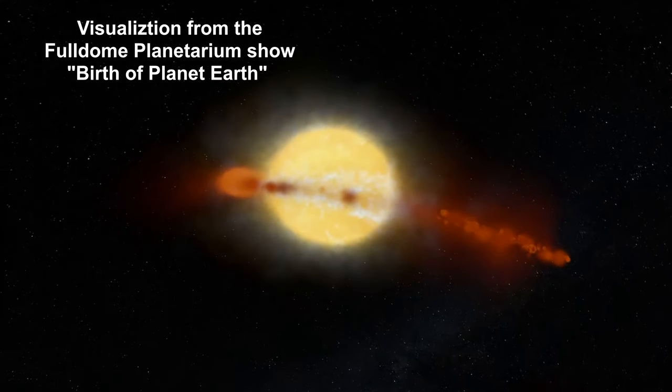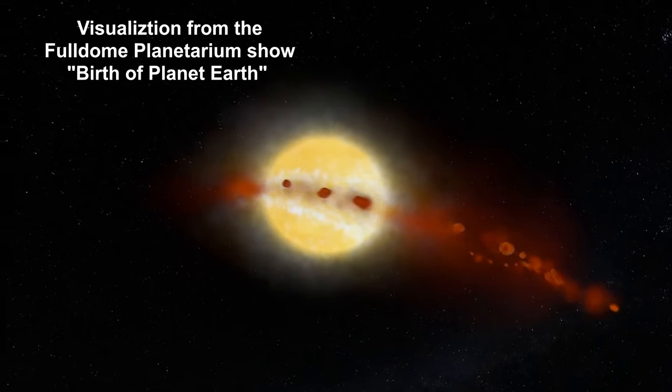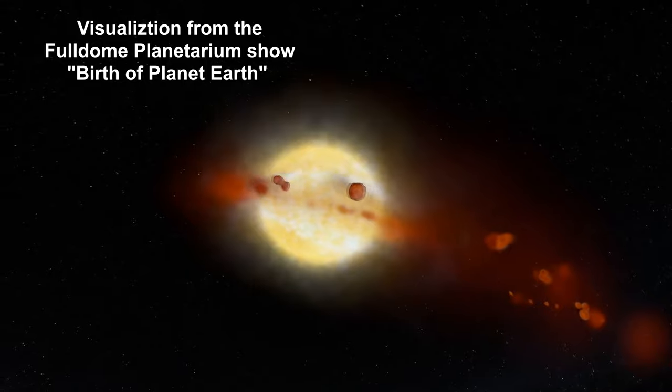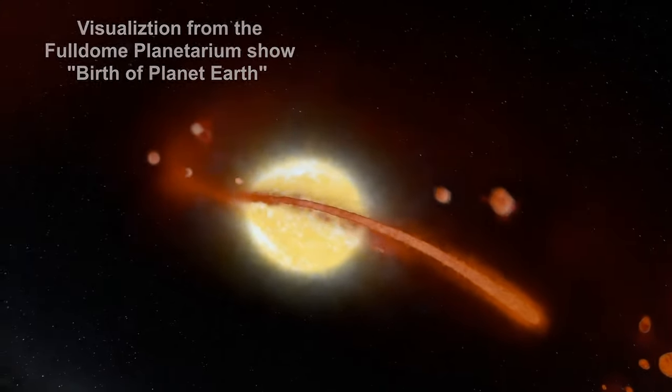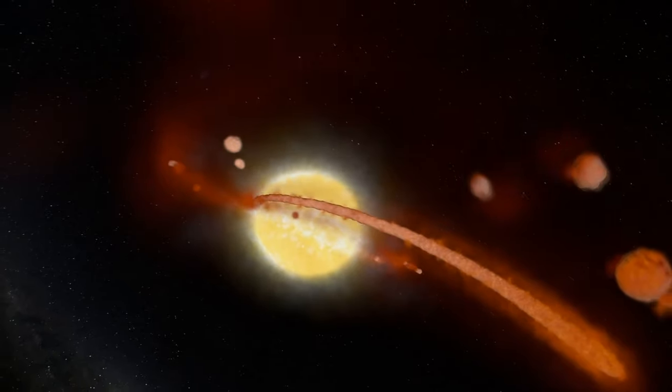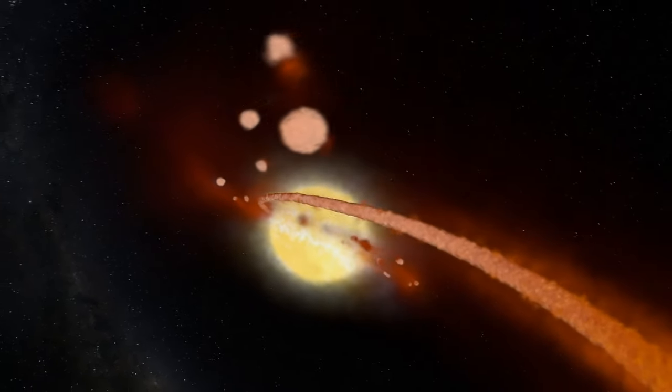The hypothesis that currently comes closest to what happened has it that a planet the size of Mars, called Theia, moved in from the outer solar system with major quantities of water, and collided with the Earth shortly after it had formed.